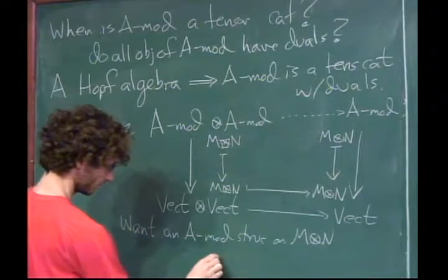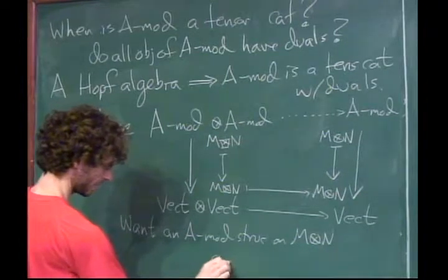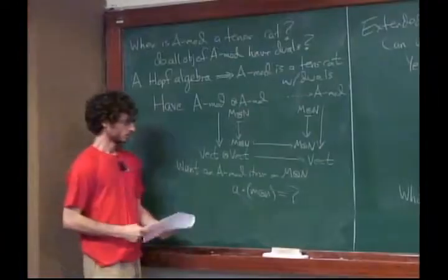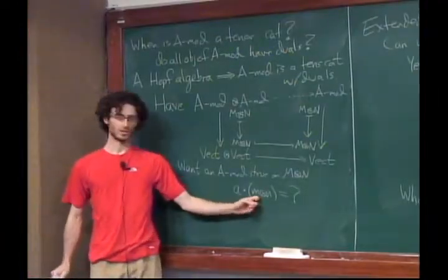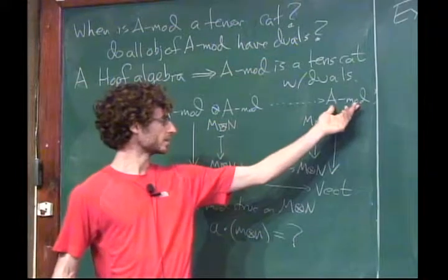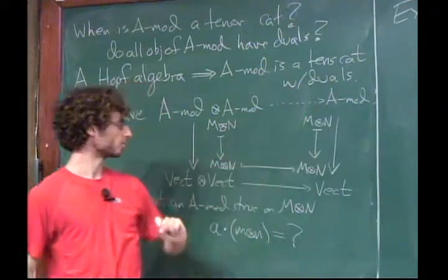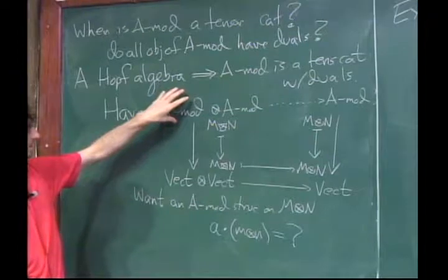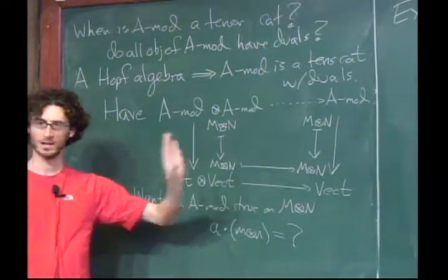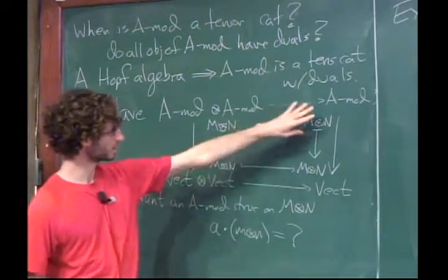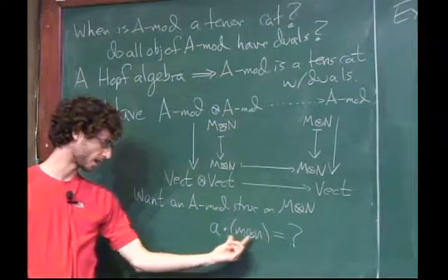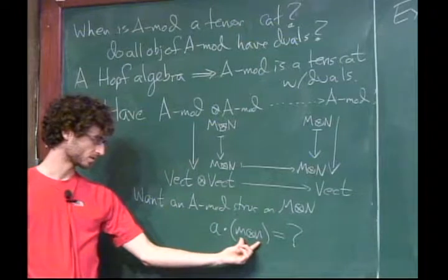The question is whether I can put an A-module structure on M tensor N, because we want this tensor product to respect the forgetful functor to Vect. We want an A-module structure on M tensor N that isn't a stupid structure. For instance, if we just act on M on the left side, it won't give something that has units on both sides and it's completely asymmetric — it fails lots of conditions. We need some kind of symmetric way to let A act on the tensor.